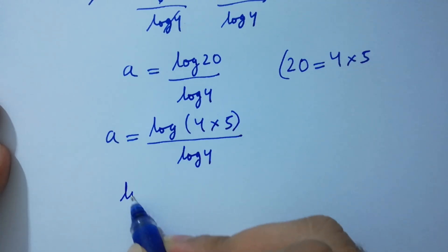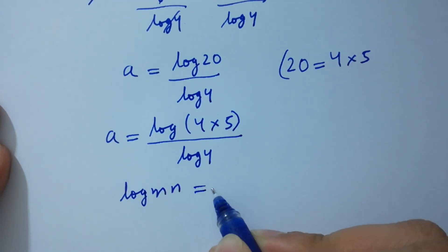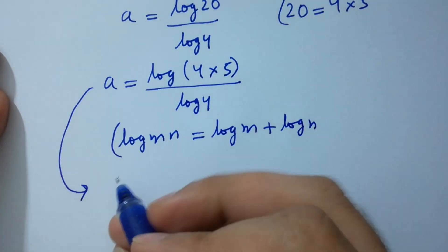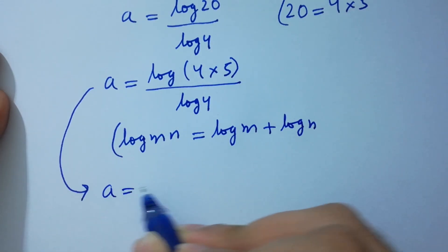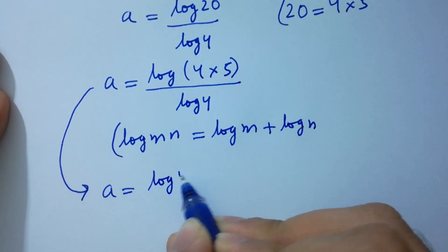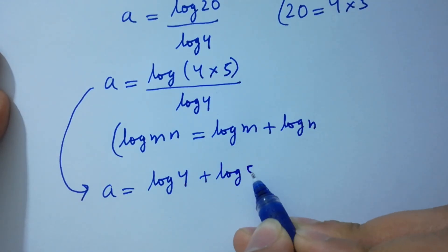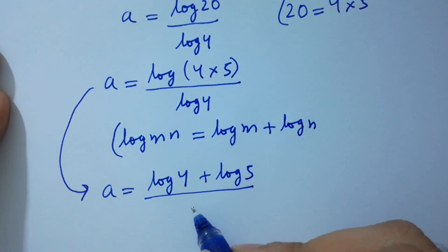Log mn equals log m plus log n. A will be equal to log 4 plus log 5 over log 4.